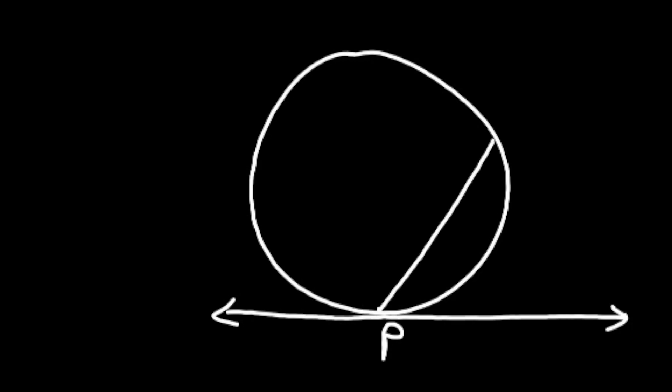If I draw a chord, then there is a formation of angle between chord and tangent. We have that theorem, alternate segment theorem. If this angle is x, where will be the formation of x degrees inside the circle?